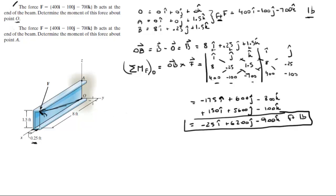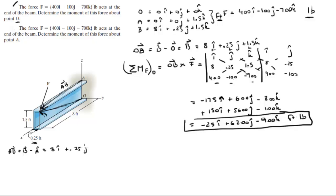For the second problem, we do the exact same thing except we want the moment about A. For that, you find the vector from A to B. Vector AB equals vector B minus vector A, which comes out to be 8i plus 0.25j plus 0k — so there's no z-component difference. The moment that the force creates about A is given by AB cross F.